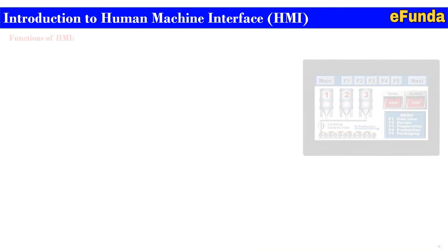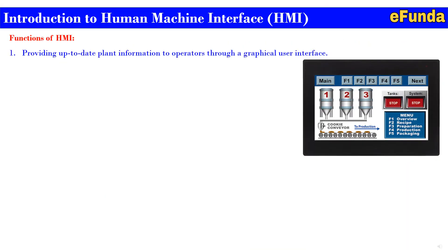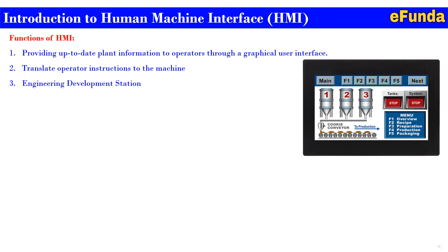Functions of HMI. First, providing up-to-date planned information to operators through a graphical user interface. Second, translate operator instructions to the machine. Third, engineering development station.